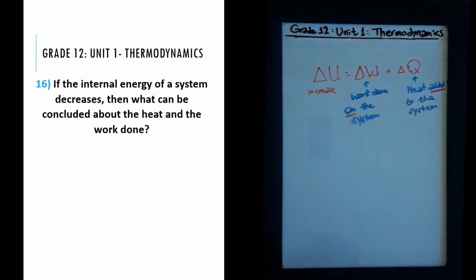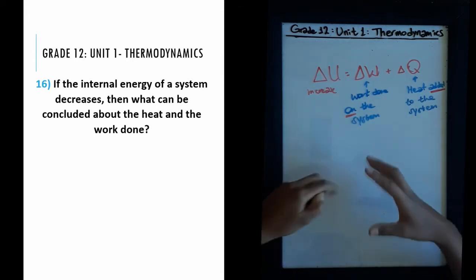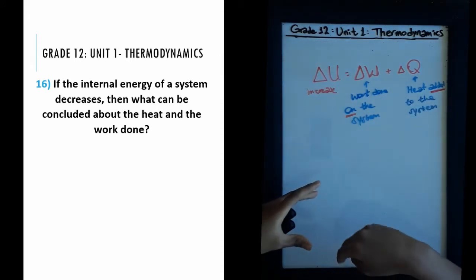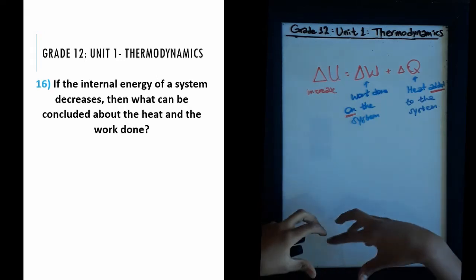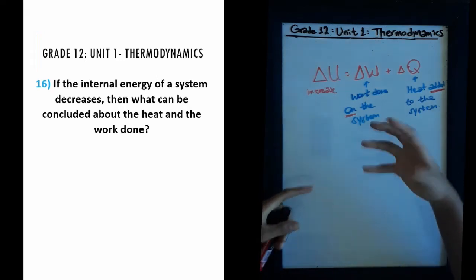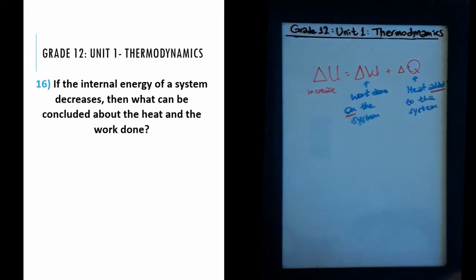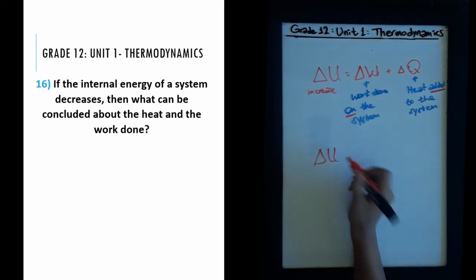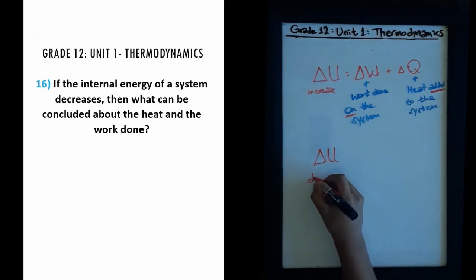It technically makes sense: if you consider a system and you're trying to find how much energy is inside it, the work done on the system increases the internal energy, and the heat added to the system also increases the internal energy. But our question is asking about the decrease in internal energy. So what would the formula look like when we consider the decrease?